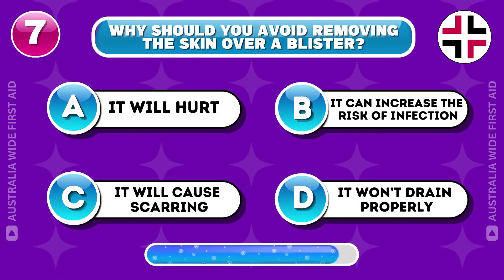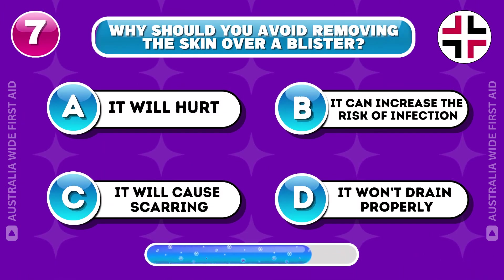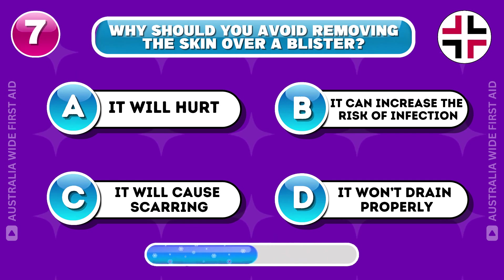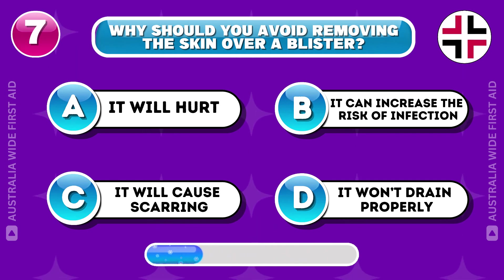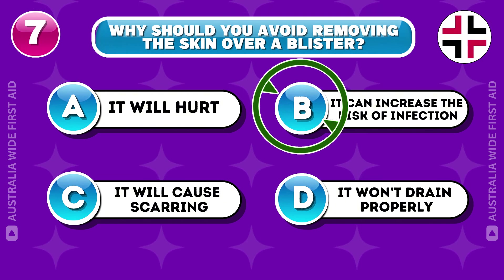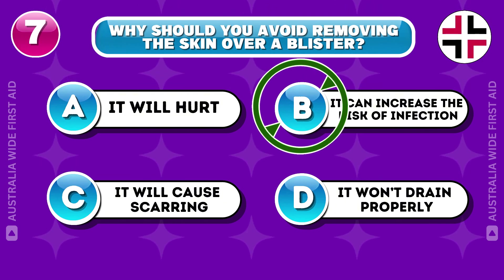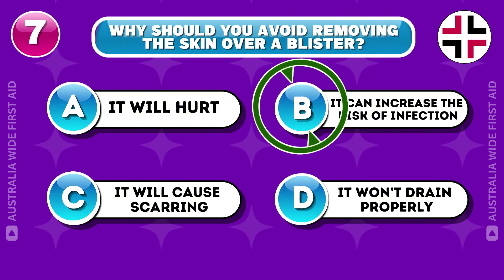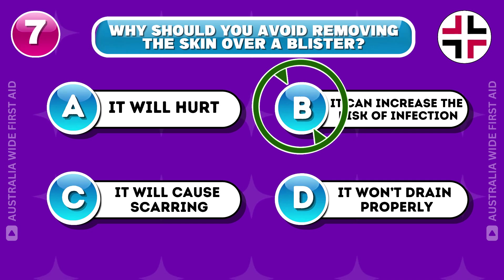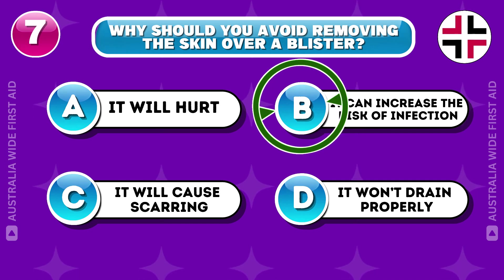Why should you avoid removing the skin over a blister? Correct answer: B. The skin acts as a barrier against bacteria, so removing it can expose the area to infection.